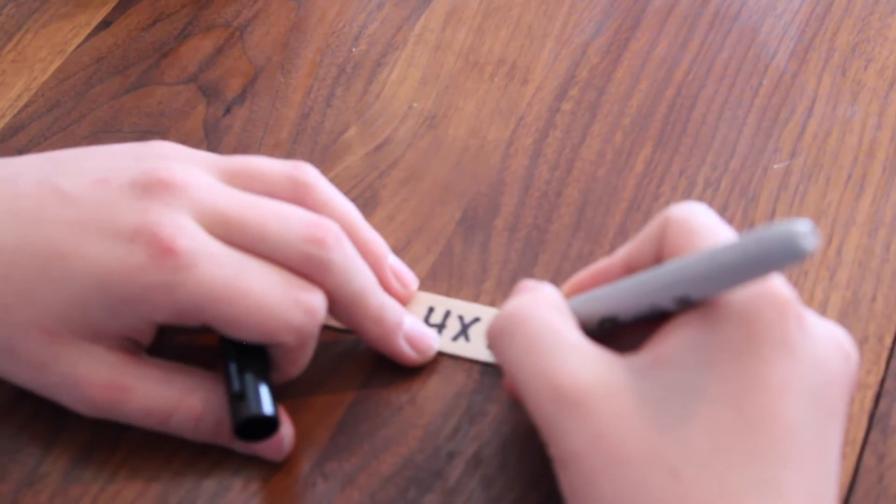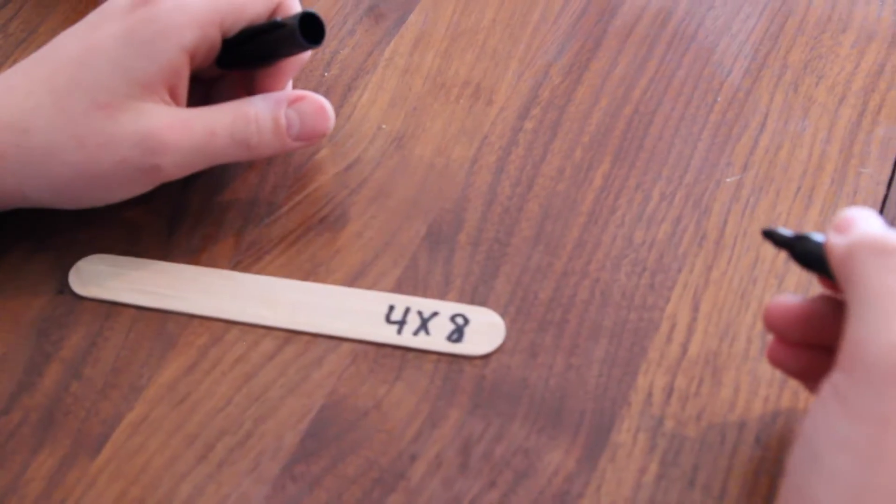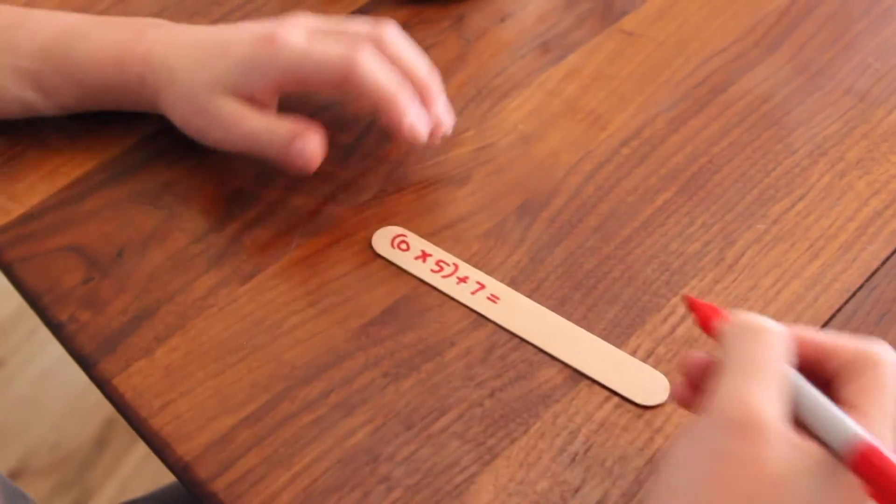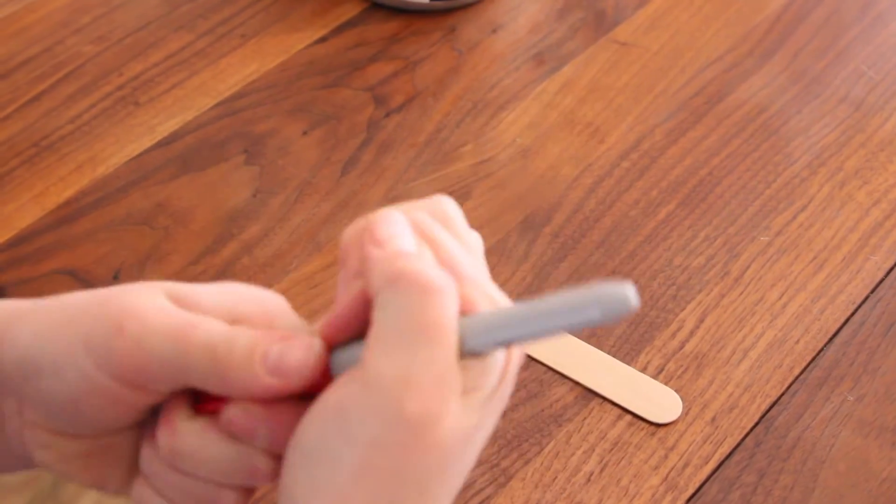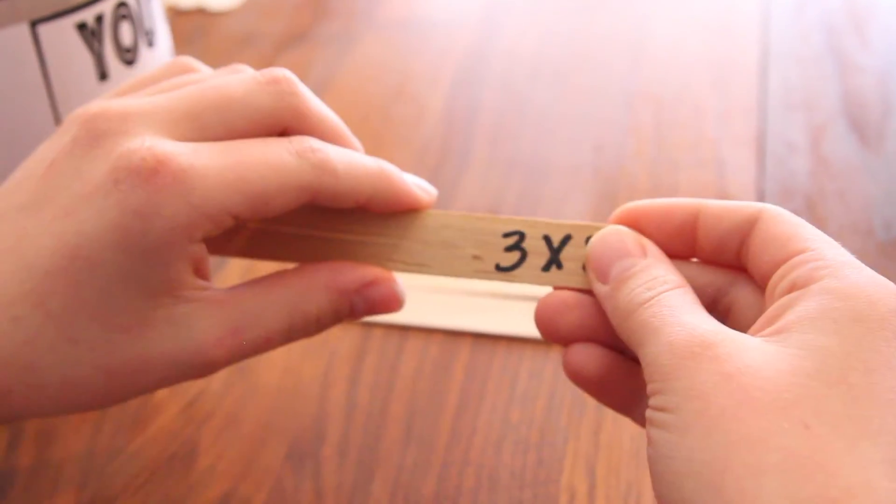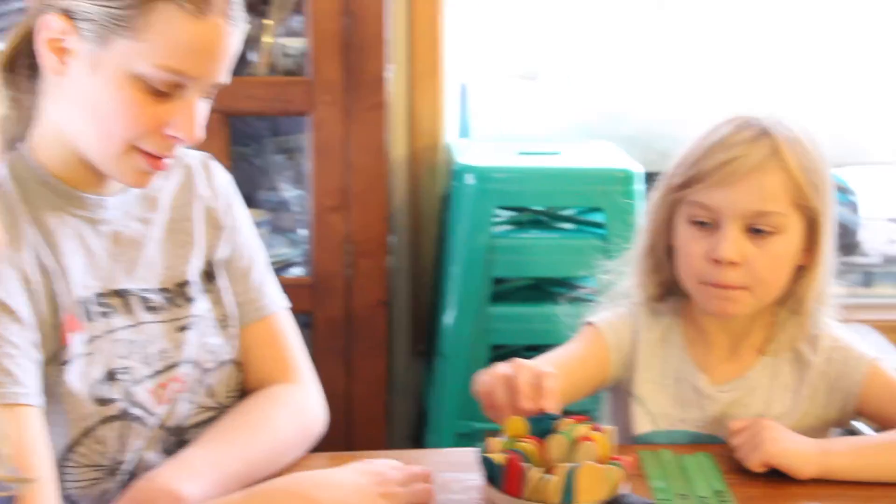To make this the perfect game for beginning and advanced students, use a black marker on one side of the stick for basic times tables problems and use a red marker on the other side for more advanced multiplication problems. Students know to find their assigned color after drawing their stick.